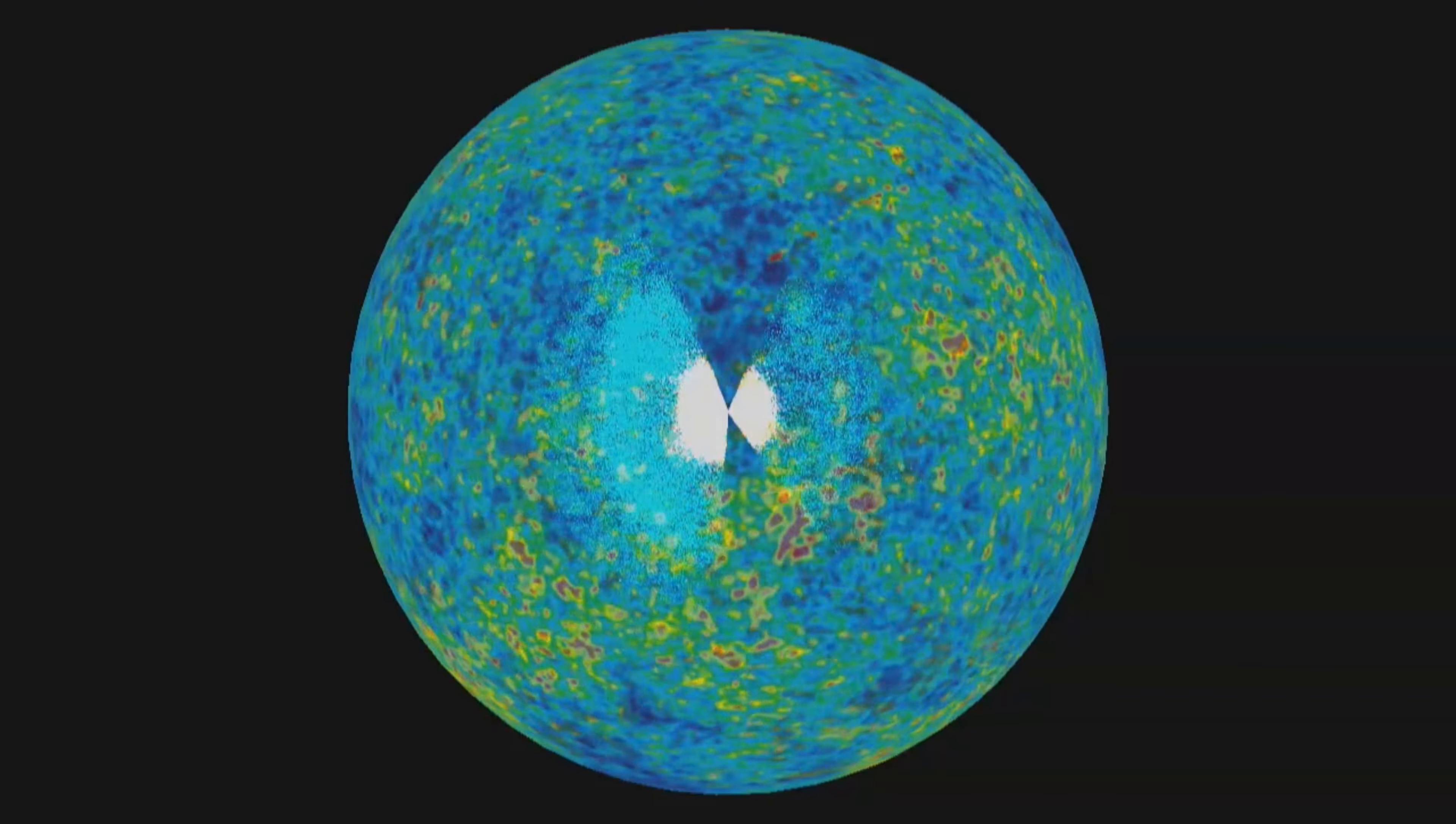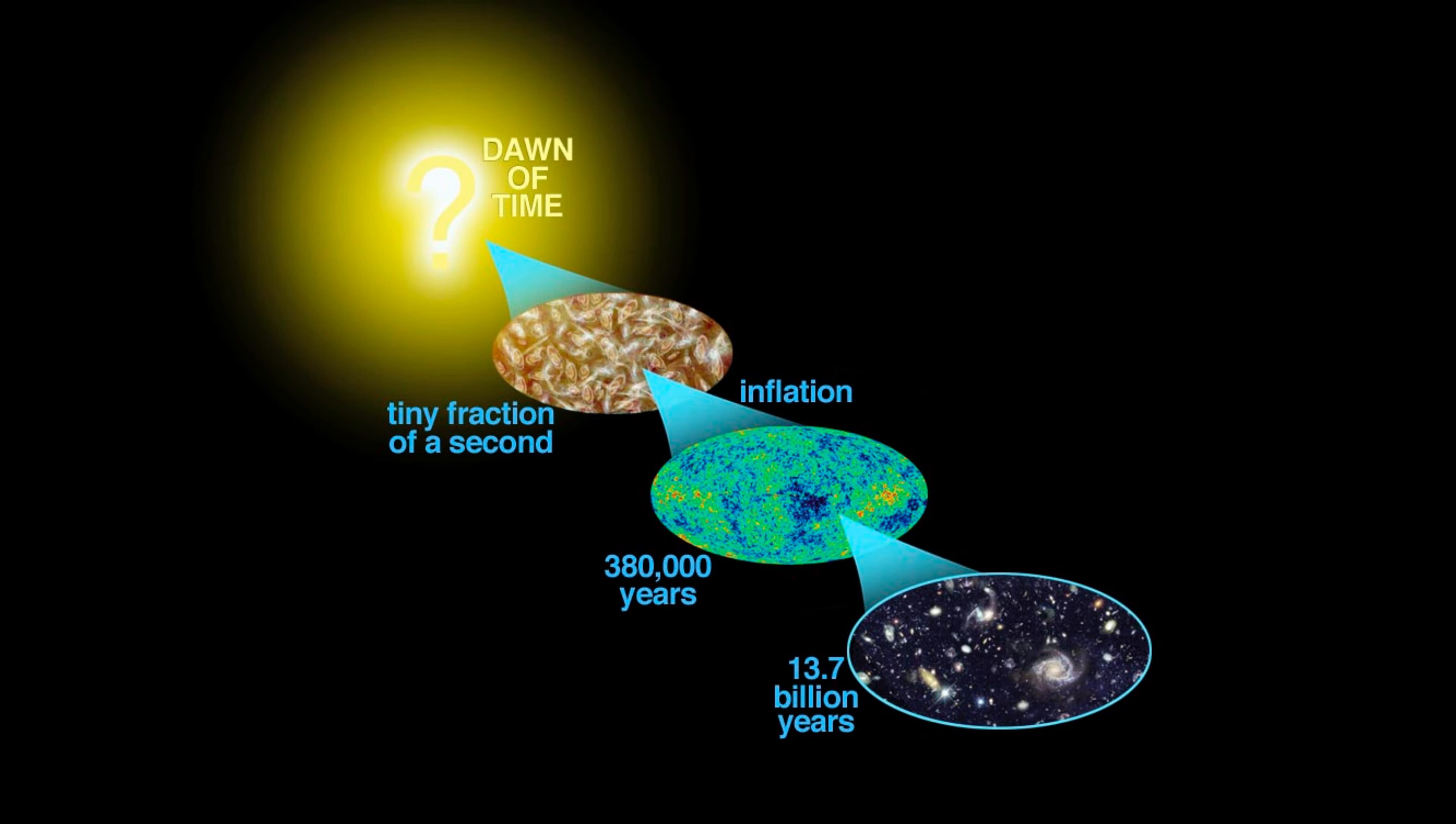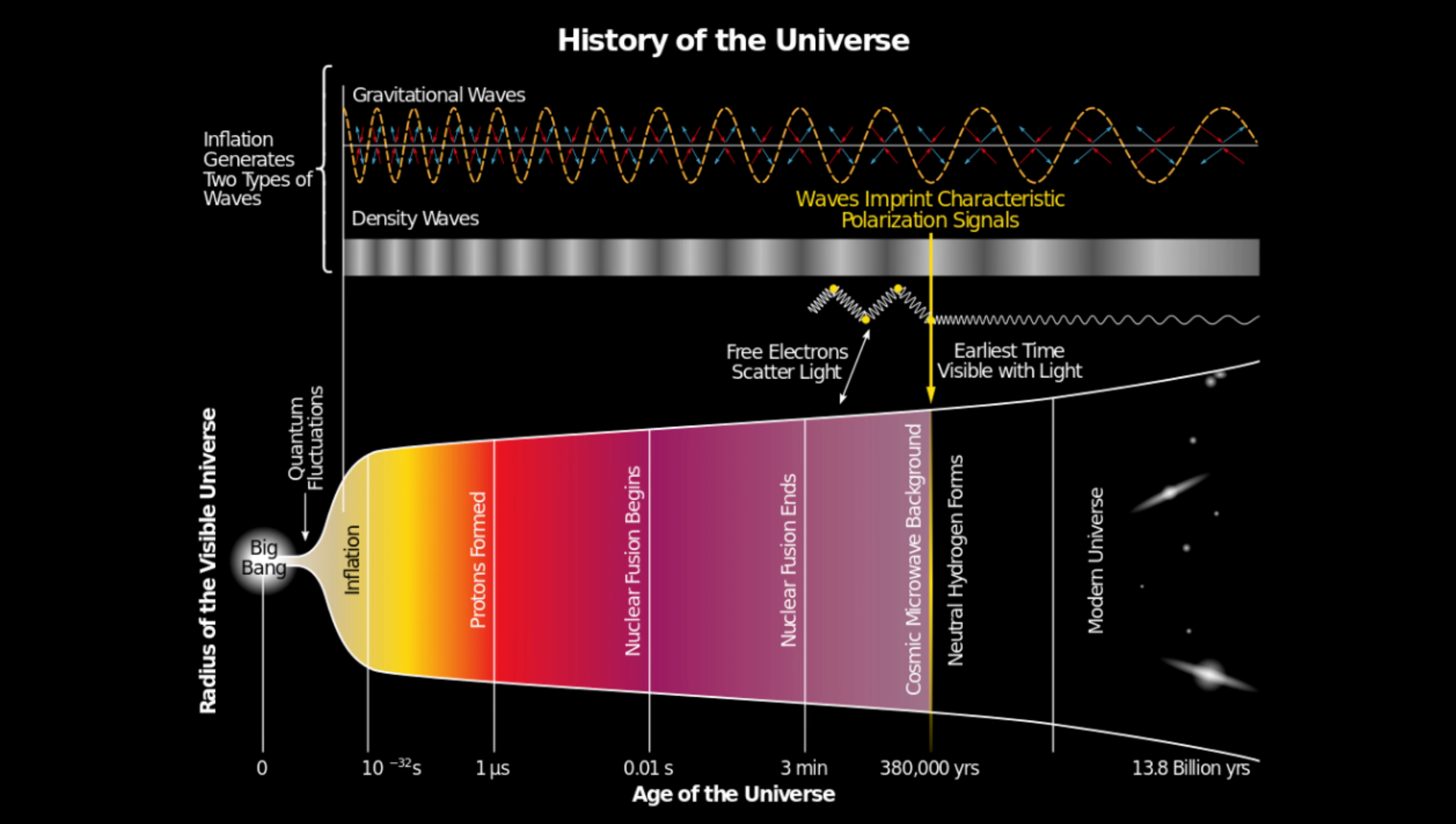The third evidence for a flat universe comes from inflationary theory. This leading cosmological model predicts a flat universe as a natural consequence of its rapid expansion phase shortly after the Big Bang. Inflation is an extension of the Big Bang theory, in which the universe expanded from an atomic scale to a cosmic scale in a fraction of a second, making the universe geometrically flat.